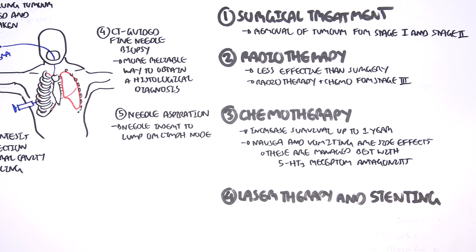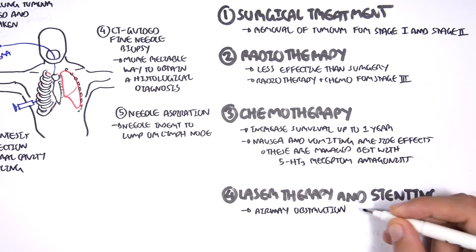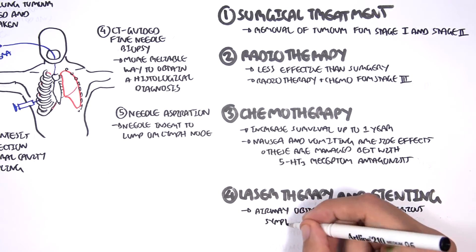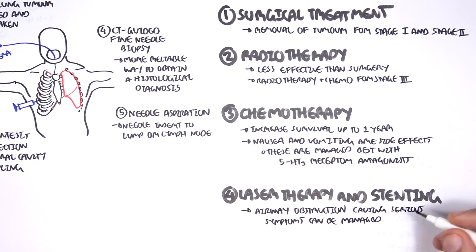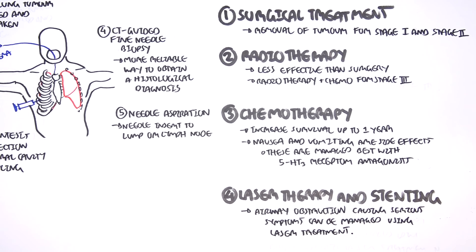Laser therapy and stenting can also be done. Airway obstruction from the tumor growth causing serious symptoms can be managed using laser treatment and stenting. Essentially, the obstruction of the airway, you basically remove it so air flow can resume.